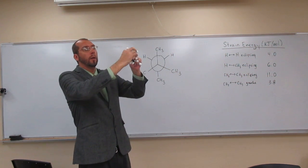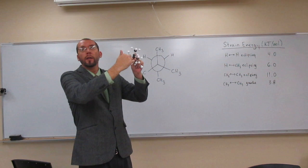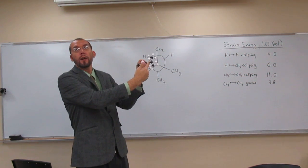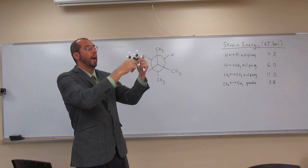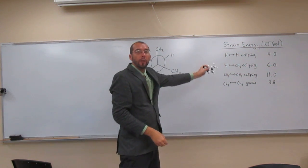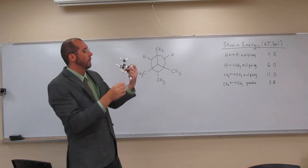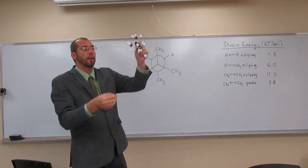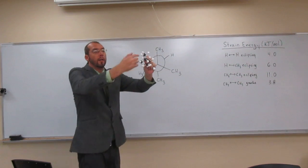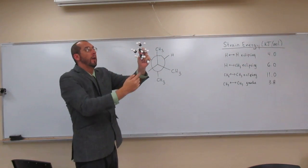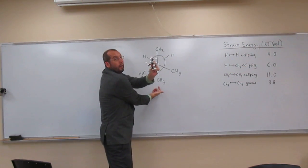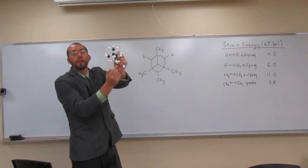And remember, we can rotate around this sigma bond here, this carbon-carbon sigma bond. And that's where this table is coming from, this Newman projection here. The particular Newman projection we have here is this one. You can see the three methyls in front and then the one methyl in the back here.